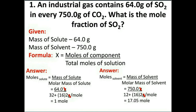Now let's look at an example. An industrial gas contains 64.0 grams of sulfur dioxide (SO₂) in every 750 grams of carbon dioxide (CO₂). This means sulfur dioxide is the solute and carbon dioxide is the solvent, because sulfur dioxide is dissolved in carbon dioxide. We have to calculate the mole fraction of sulfur dioxide.